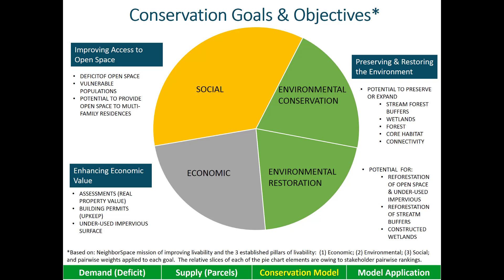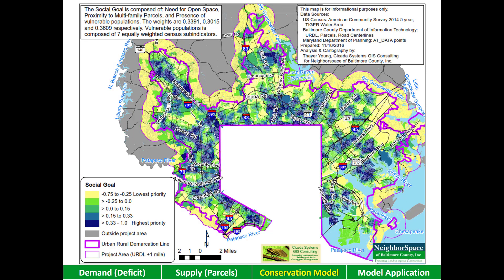To improve access to open space — the social goal — we thought it would be important to see on the ground the deficit of open space from the two maps we just reviewed, as well as the existence of vulnerable populations for whom access to open space is often challenging, and the existence of multi-family residences where higher density tends to increase the need for open space. These map layers were ranked by stakeholders and then combined into a single GIS map for the social goal, which you can see here. The darker blue areas tell us where improving access to open space is most needed, and the need is pretty high across the area inside the ERDL.